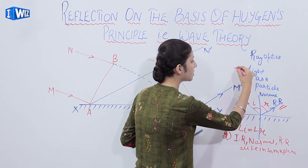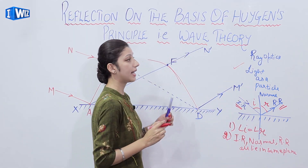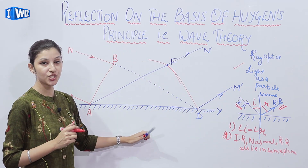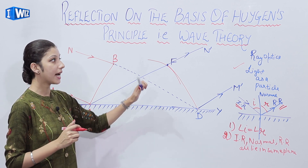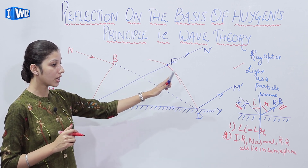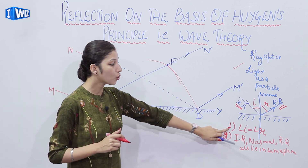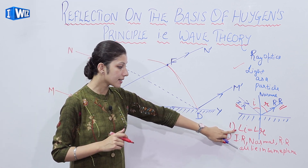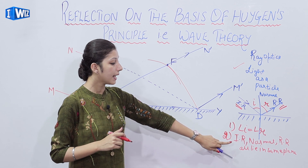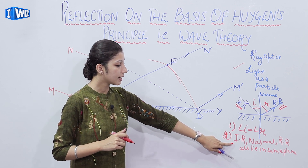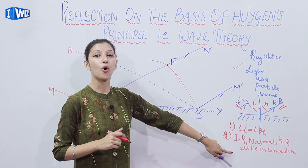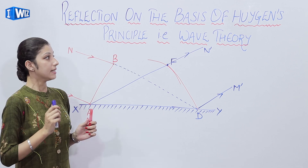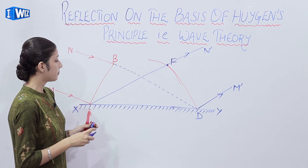Today we are going to study reflection using Huygens' principle, that is the wave theory. Today we will prove both these laws — that i equals r, and that the incident ray, normal, and reflected ray all lie in the same plane.